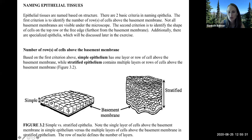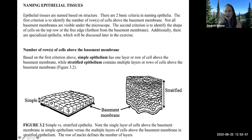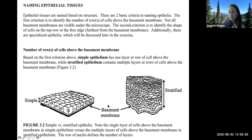Epithelial tissue can be simple or stratified. If it's simple, it just has one layer of cells attached to a basement membrane. A basement membrane is just a layer of tissue found below the epithelial tissue that all the cells are attached to. Simple epithelium is one layer of cells. Stratified epithelium is multiple layers of cells above the basement membrane. The basement membrane is a type of connective tissue that anchors the epithelial tissue to whatever is below it.